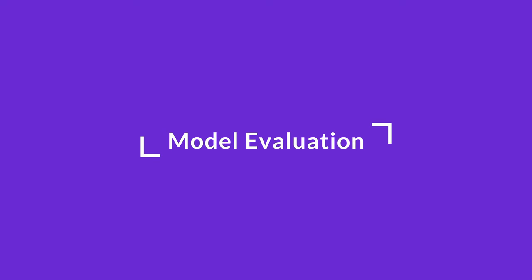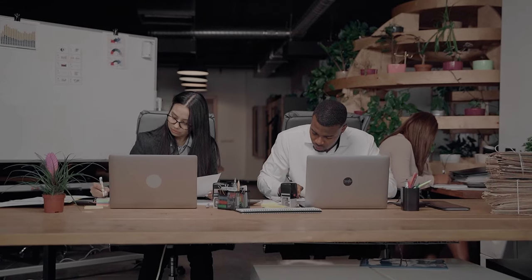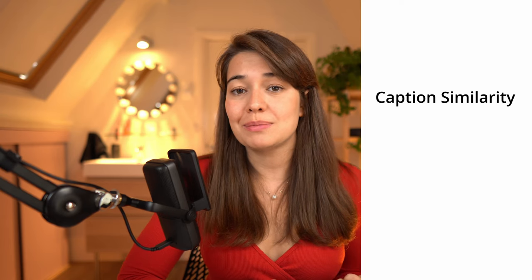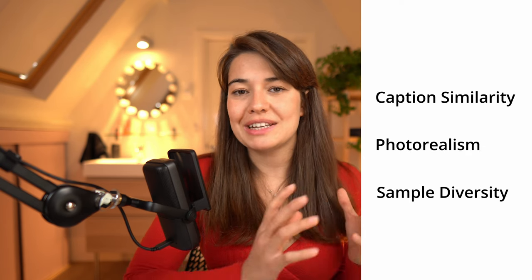We learned how DALL-E 2 works, but how can you make sure it is a good model? Evaluating a creative model like DALL-E 2 is challenging because you cannot use simple metrics like accuracy or mean percentage error. To evaluate it, the authors asked humans to assess the model's outputs in terms of caption similarity, photorealism, and sample diversity by looking at example images and answering questions. The authors found that DALL-E 2 was strongly preferred when it came to sample diversity.